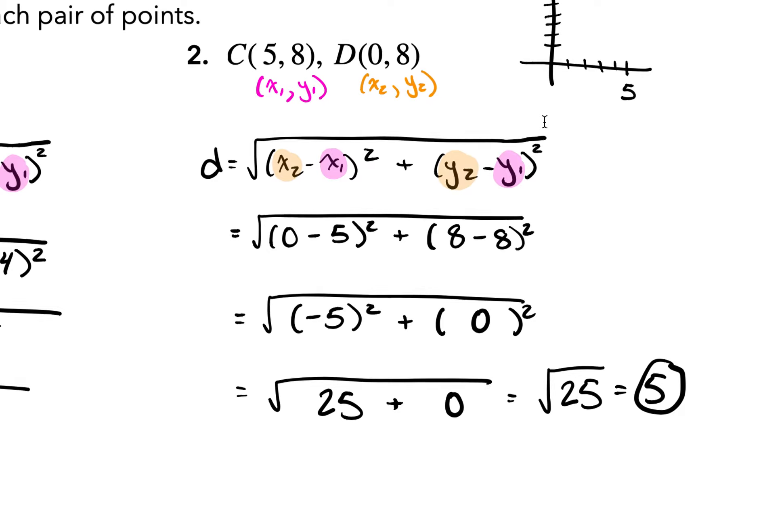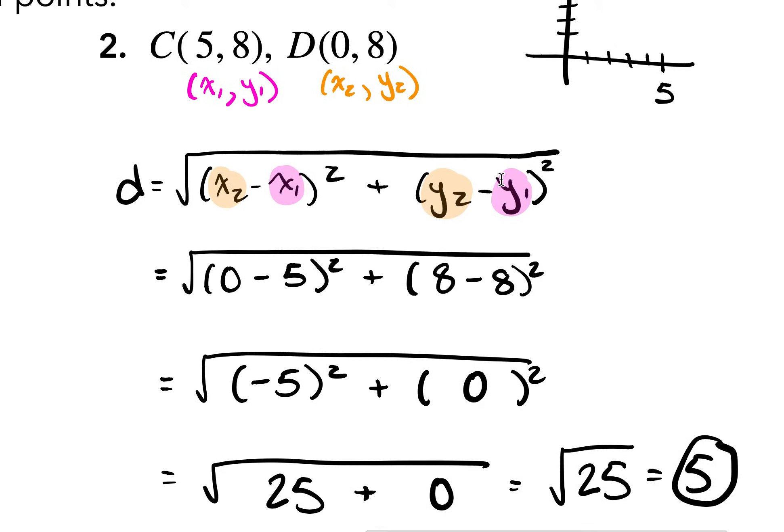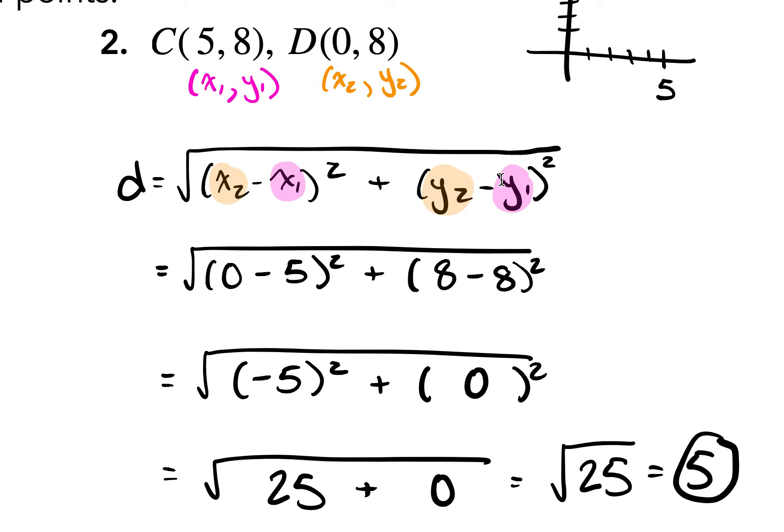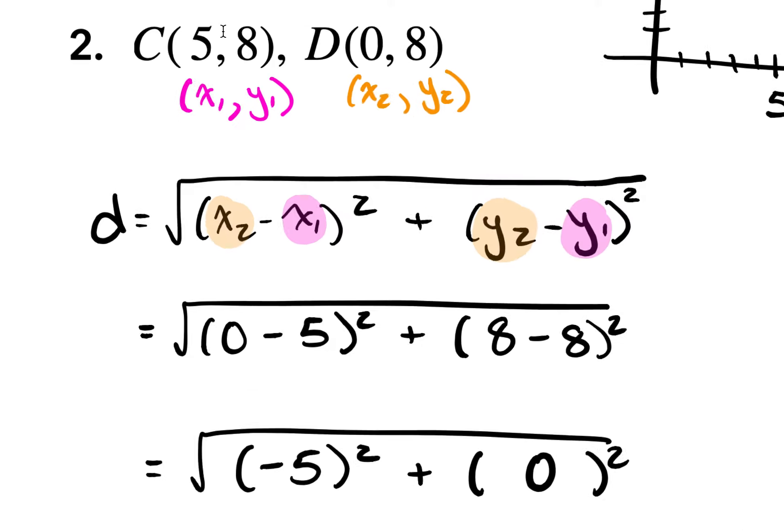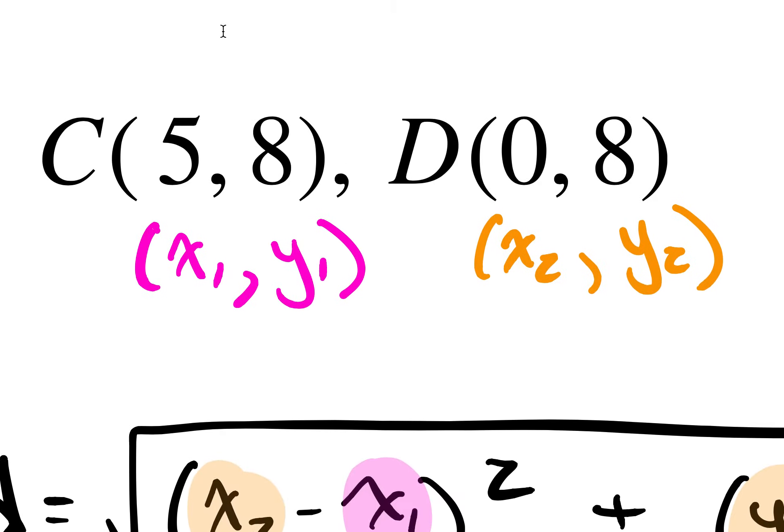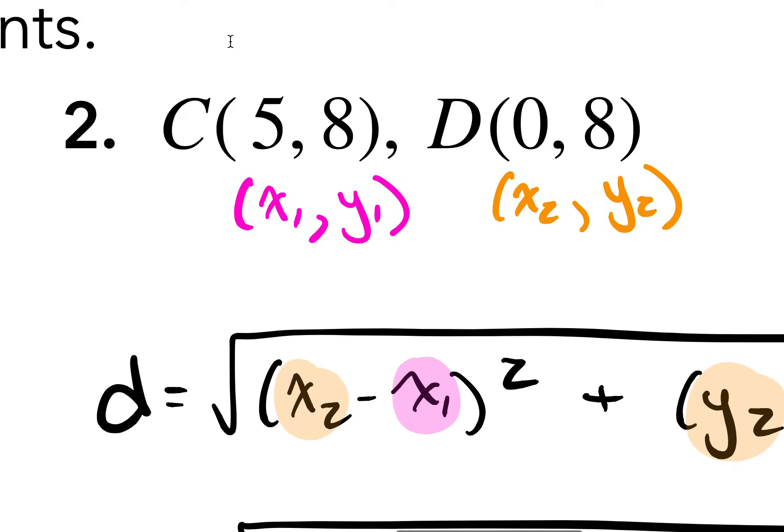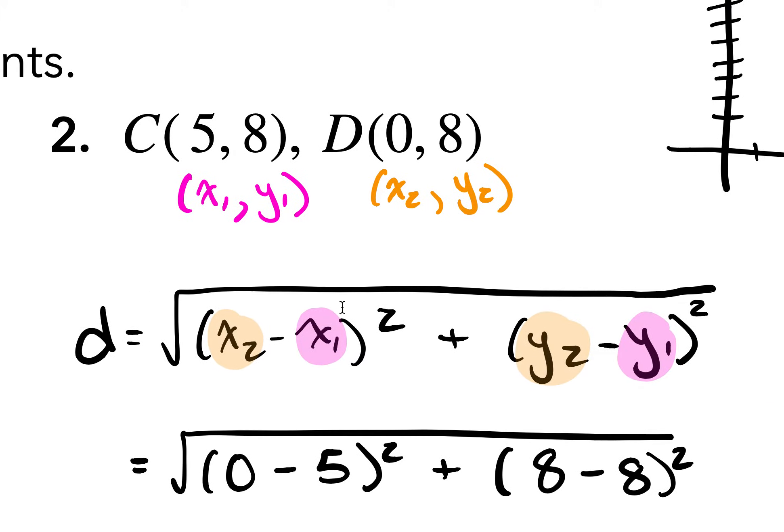We follow the same process for number 2. First, we look at the information that we have, and we figure out what can I do with that information. So what do we know? We know that 5 is our x, and 8 is our y for our first point, so that's x1, y1. And then for our second point, 0 is our x, and 8 is our y, so that's our x2, y2. We're going to take that information and plug it into our distance formula.